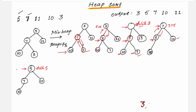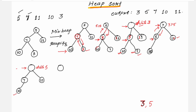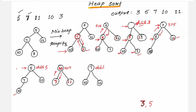Once you delete 5, the position becomes vacant. The only leaf node remaining is 10, so 10 comes to the root. Now the tree has 3 elements. The parent node 10 is greater than child node 7, so you need to swap — this procedure is called heapify. After heapify, the root node is 7, which gets deleted and added to the sorted list.